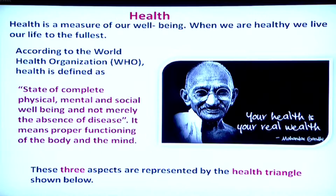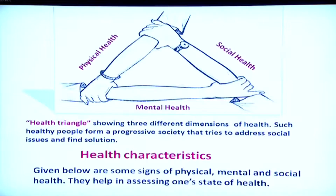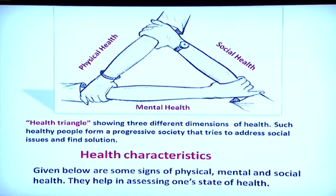These three aspects — the physical, mental, and social aspects of health — are well shown in this triangle, which we call the health triangle. Observe the three hands; they are holding each other, meaning the three factors go together. Only when a person is physically, mentally, and socially healthy is that person called healthy.